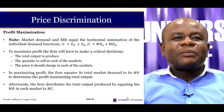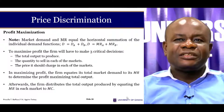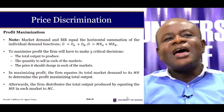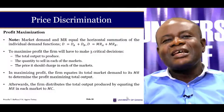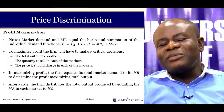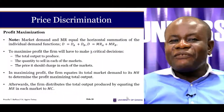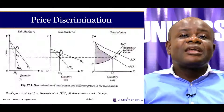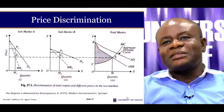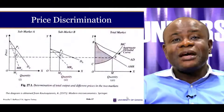Just as with multi-plant monopolies, the price-discriminating monopolist must make three critical decisions to maximize profit: what should be the total output to produce, what quantity should be sold in each market, and what price to charge in each market. In maximizing profit, the firm allocates output such that the marginal revenue in market A equals the marginal revenue in market B, and both equal the total marginal revenue.